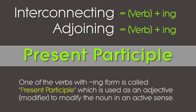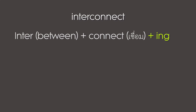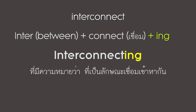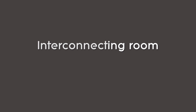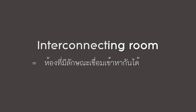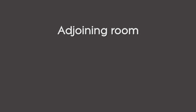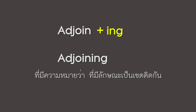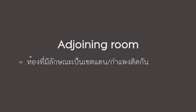So the verb 'Interconnect' with -ING added becomes 'Interconnecting,' meaning 'having the quality of connecting together.' Therefore, 'Interconnecting room' means a room that connects to another. Similarly, 'Adjoin' with -ING becomes 'Adjoining,' meaning 'having the quality of being adjacent.' Therefore, 'Adjoining Room' means a room whose boundary or wall is adjacent to another room.